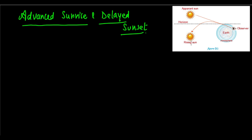Let's have a look at this diagram. This is the observer on the earth, and suppose this is the rising Sun. The rising Sun sends its light rays to the earth, and from the atmosphere it undergoes progressive refraction, ultimately reaching the eye of the observer. But we won't see this curved path of light — we will see a straight path of light caused by the backward extension of the ray that has entered our eyes.